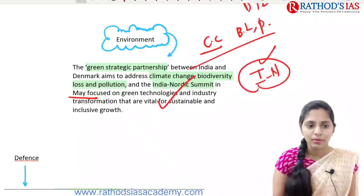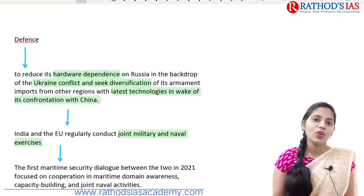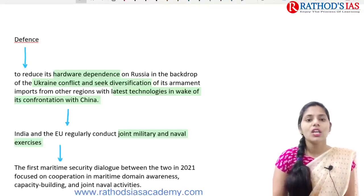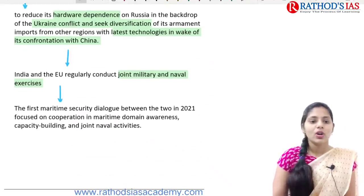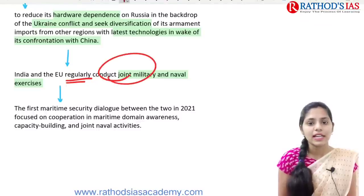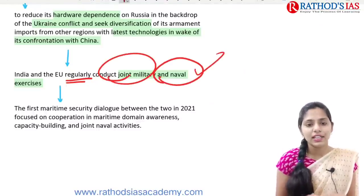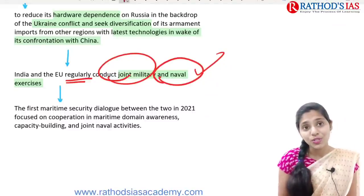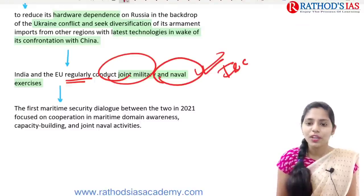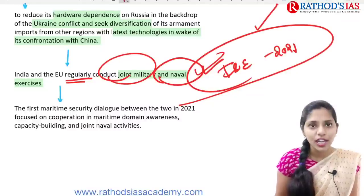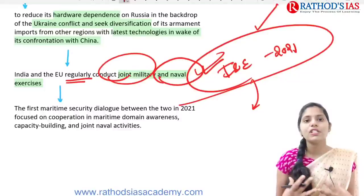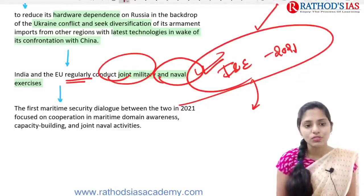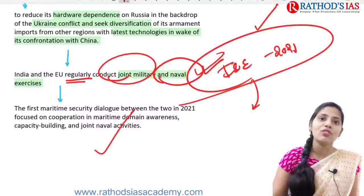In the defense sphere, we are also getting some important technology from the European Union, which will help reduce our dependence on Russia for defense-related technology. India and the European Union regularly conduct joint military and naval exercises — let me know the name of those exercises in the comment box, that's the second question of the day. We also came up with a maritime security dialogue between India and the EU in 2021, focusing on the Indo-Pacific region — specifically a free, open and sustainable Indo-Pacific region — and on awareness, capacity building and joint naval activities.